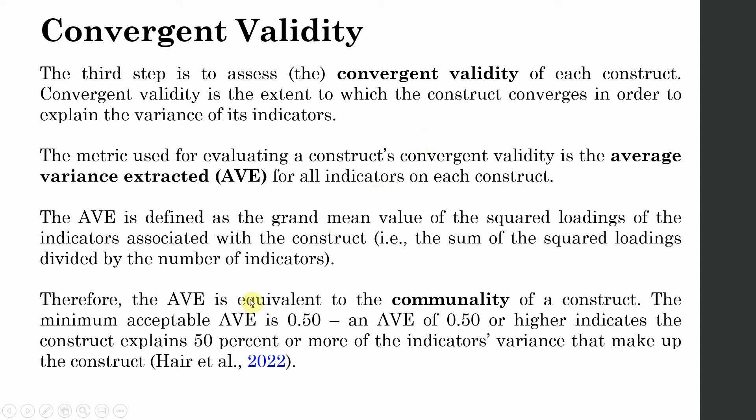Therefore your AVE is equivalent to commonality of a construct. The minimum acceptable value is 0.50, and AVE of 0.50 or higher indicates the construct has the ability to explain 50% or more of its indicators' variance.